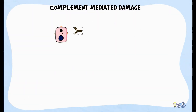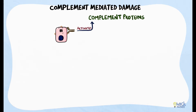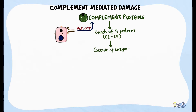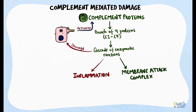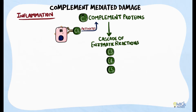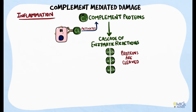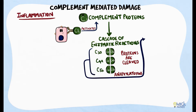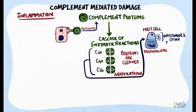Another way antibodies get rid of antigen-bearing cells is by activating complement proteins. Complement proteins are a group of 9 proteins, C1 through C9, which when activated trigger a cascade of enzymatic reactions. The resulting reactions could damage cells in two ways: either via inflammation or by forming a membrane attack complex. The complement cascade is triggered when complement protein C1 attaches to the antibody on the cell. During the enzymatic cascade, complement proteins C3, C4, and C5 are cleaved, producing C3a, C4a, and C5a — called anaphylatoxins — which stimulate mast cells to degranulate and release histamine and other inflammatory mediators.